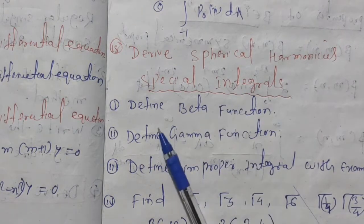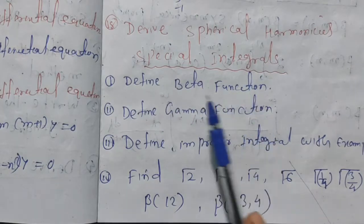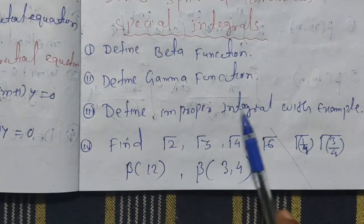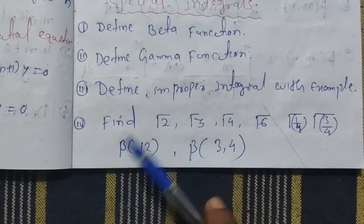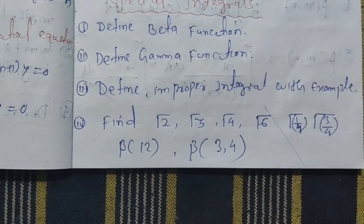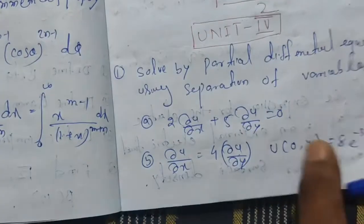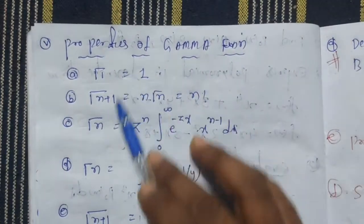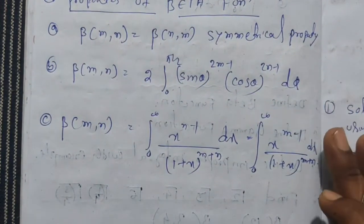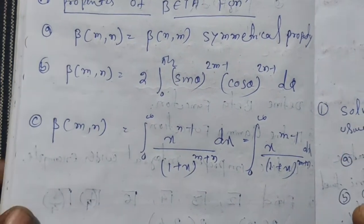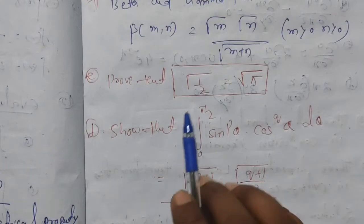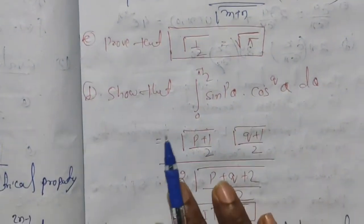In the special integrals section: define the Beta function — its definition and formula. Define the Gamma function. Define the improper integral with an example. Find the values like Γ(2), Γ(3), Γ(4), Γ(6), Γ(1/4), Γ(3/4), β(1,2), β(3,4) — these are short questions. Derive the relationship between Beta and Gamma functions. The proof that Γ(1/2) = √π is an important red-marked question.